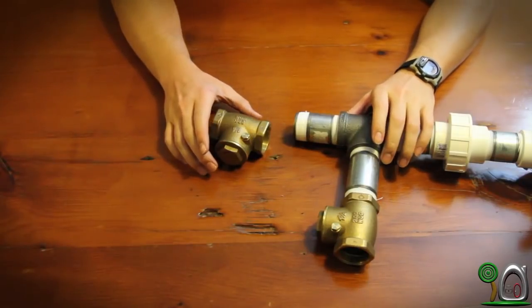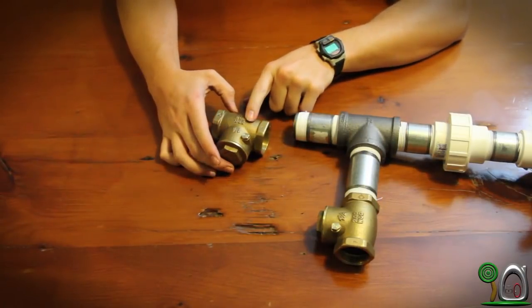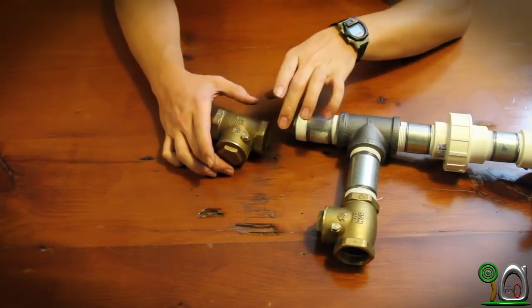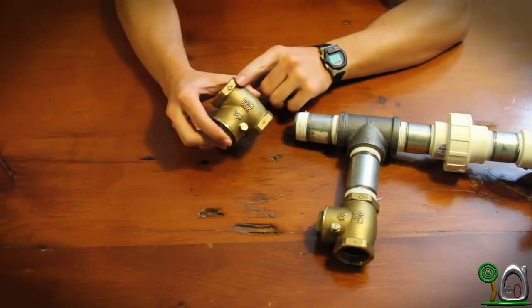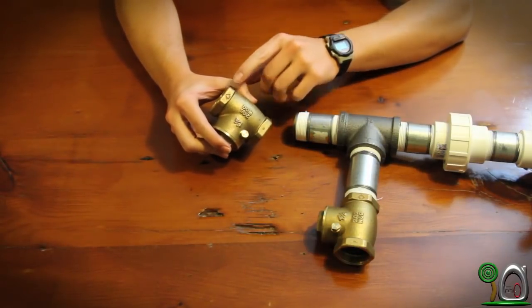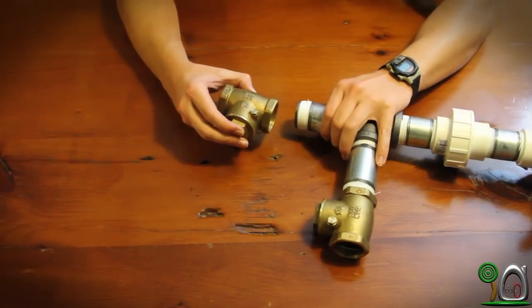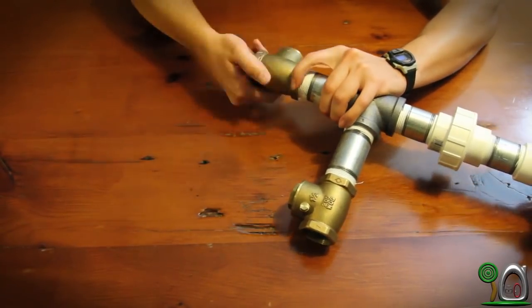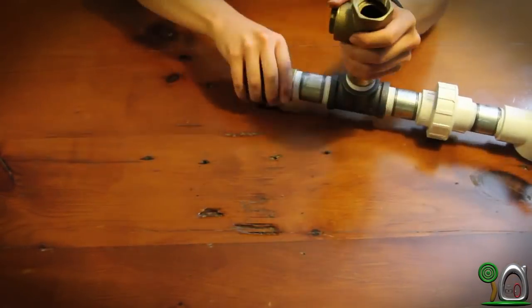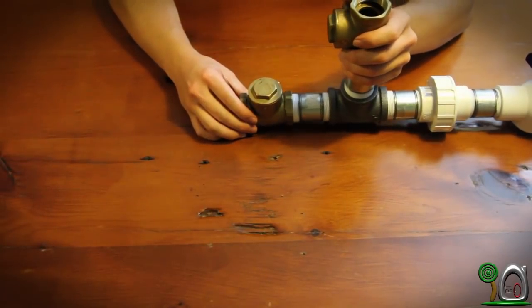Step 9. We're going to attach the other check valve or swing valve. This time, the arrow, or direction of flow, needs to be facing away from the rest of the system we've built so far. Now, when this one is tight, it's very important that the swing door hinge is facing up